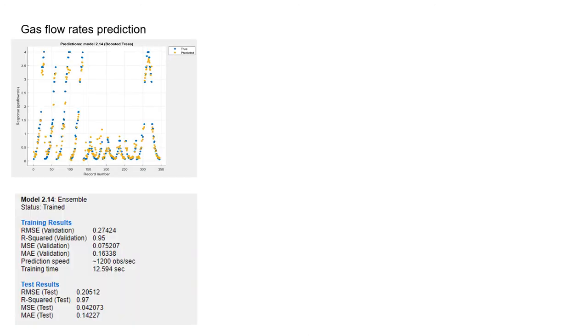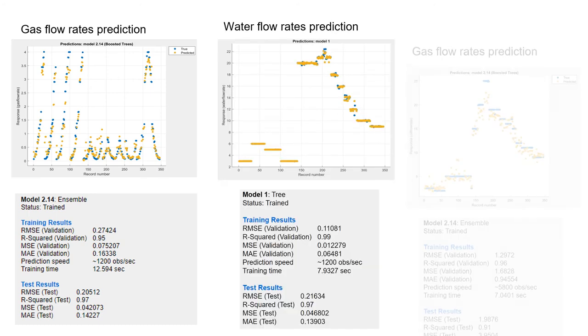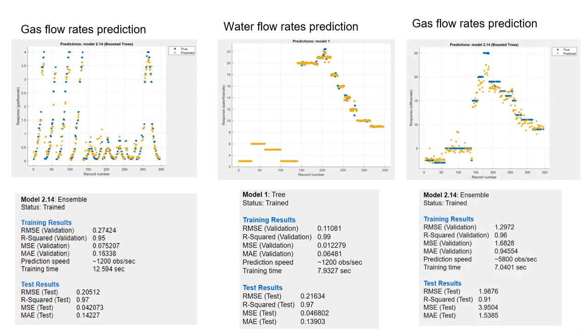For the prediction of gas flow rates, the ensemble boosted trees is the best model that has more accuracy than other models. Similarly, the flow rates of water and gas were accurately predicted by the trees model with a fine tree technique and an ensemble model with boosted trees respectively. These were the results obtained from regression models for predicting the flow rates of different fluids and multiphase flow.